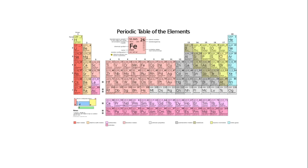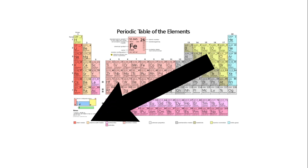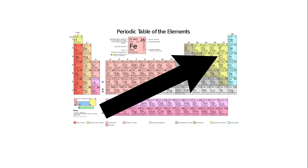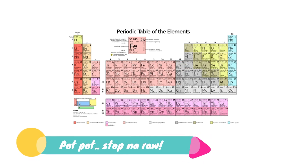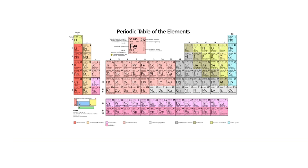All right, so there — we just finished another session. To summarize, the periodic trends we have to remember are: atomic radius, ionization energy, electron affinity, and electronegativity. The atomic radius increases top to bottom and right to left. Whereas ionization energy, electron affinity, and electronegativity all increase bottom to top and left to right. If you want more challenging exercises, let me know in the comments below. If you liked the video, give us a thumbs up and subscribe for updates. Good luck!